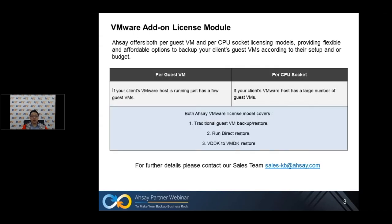Let's talk about VMware add-on license modules. ASL offers both per guest VM and per CPU socket licensing models, providing flexible and affordable options to backup your client's guest VMs. For example, if your client's VMware host is running just a few guest VMs, you would recommend the per guest VM licensing model. If your client's VMware host has a large number of guest VMs, the per CPU socket licensing model would be more suitable. Both licensing models cover traditional guest VM backup restore, run direct restore, and VDDK to VMDK restore. For further details, please contact our sales team at sales-jb.rso.com.